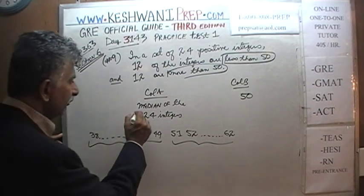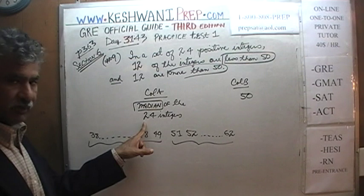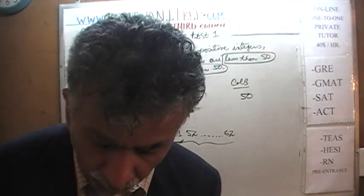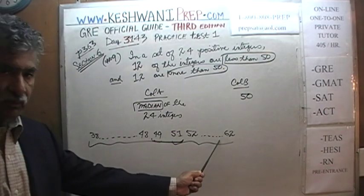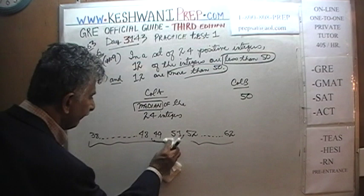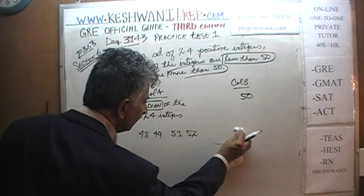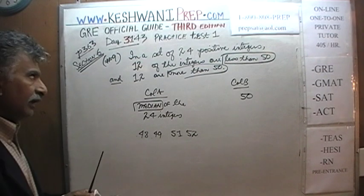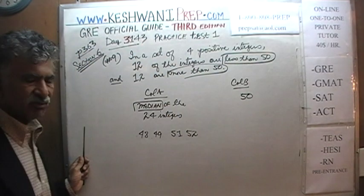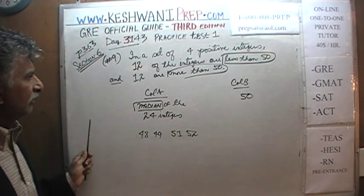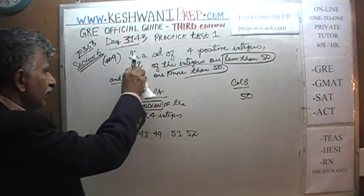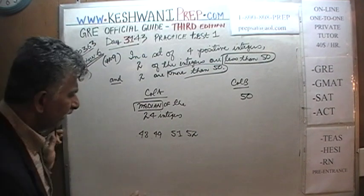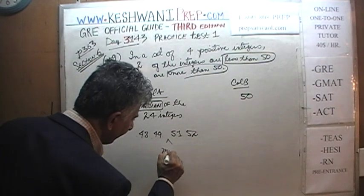What we need to understand is that we are interested in the median. Since there are 24 integers — an even number — the median is simply the average of the middle two. Whether we have 12 integers on each side, or just 2 on each side, it doesn't change anything. The median is not going to change. So let's pretend we have a set of 4 integers: 2 of them are less than 50 and 2 of them are more than 50.